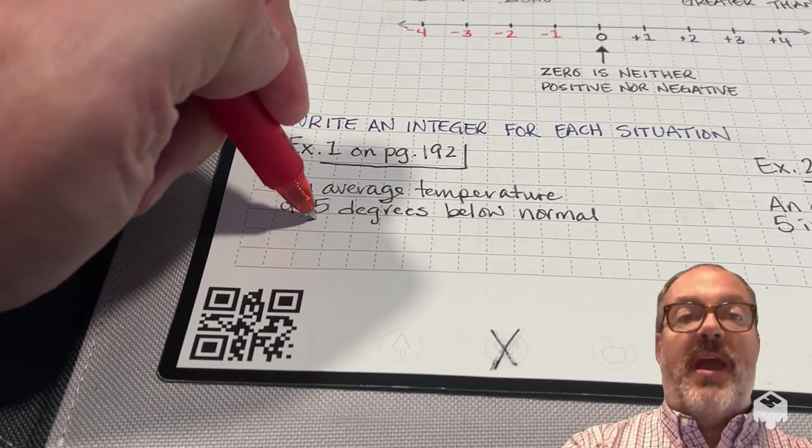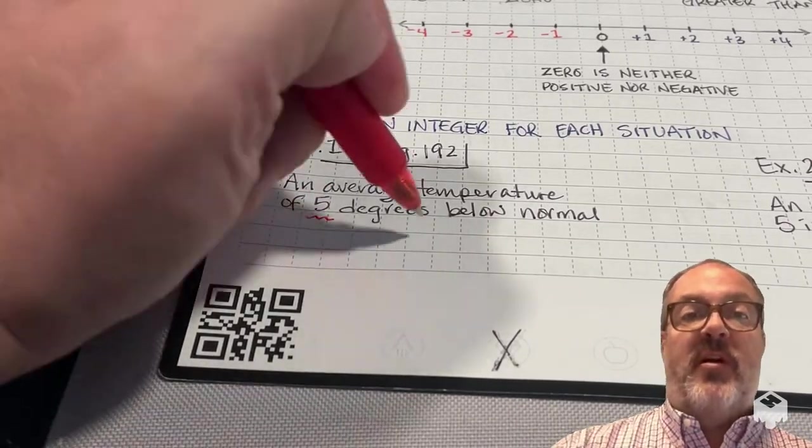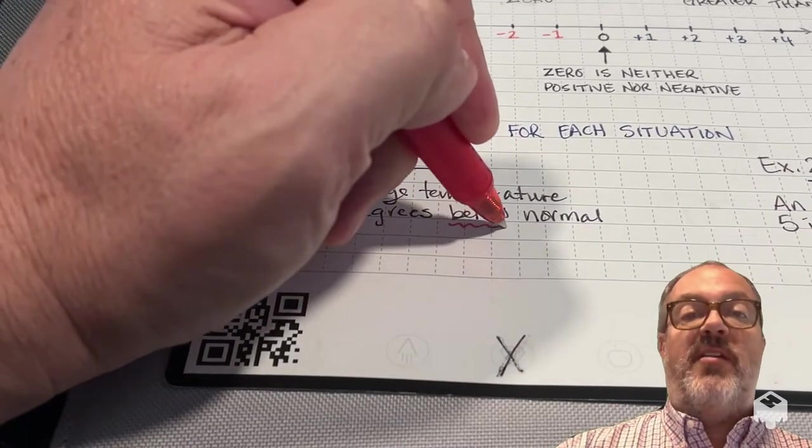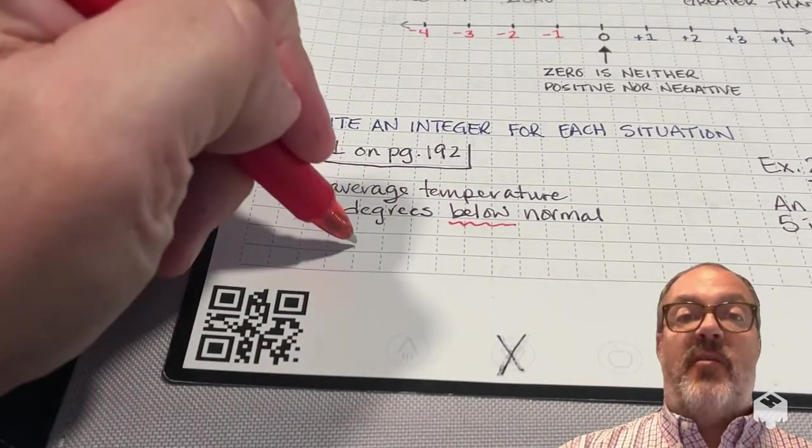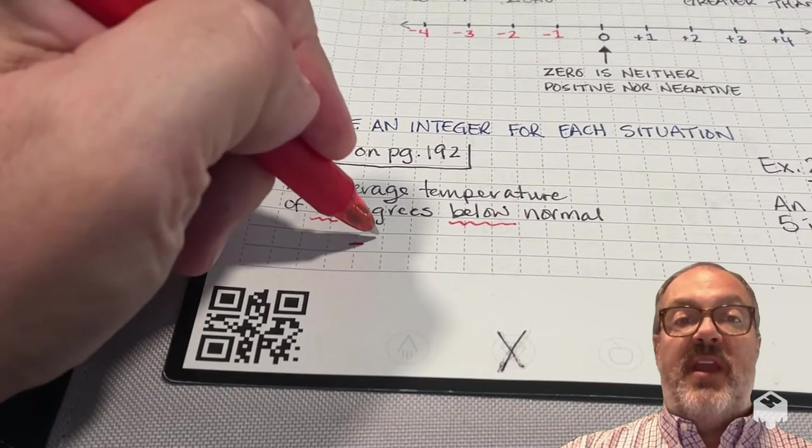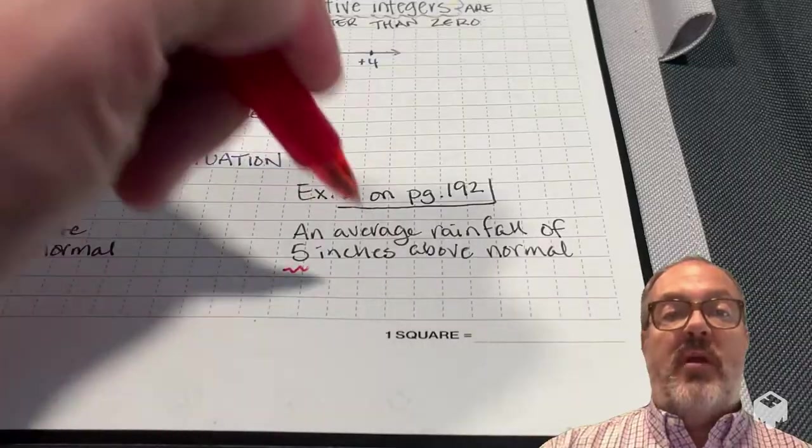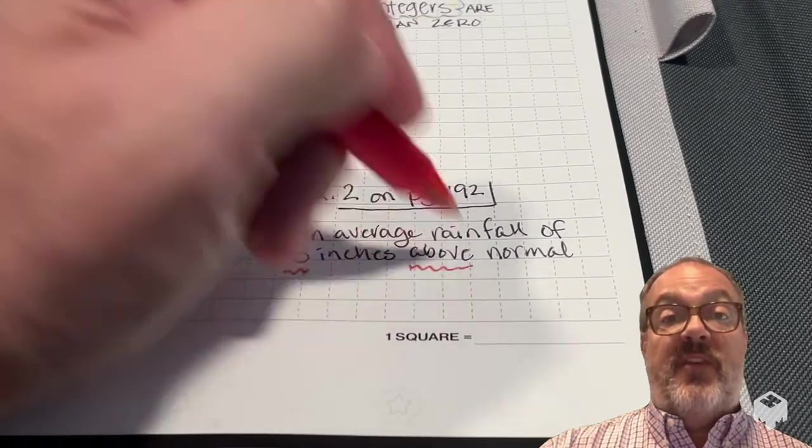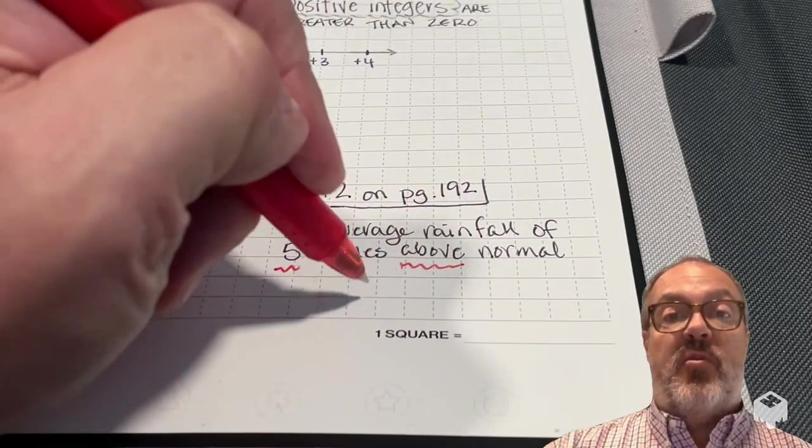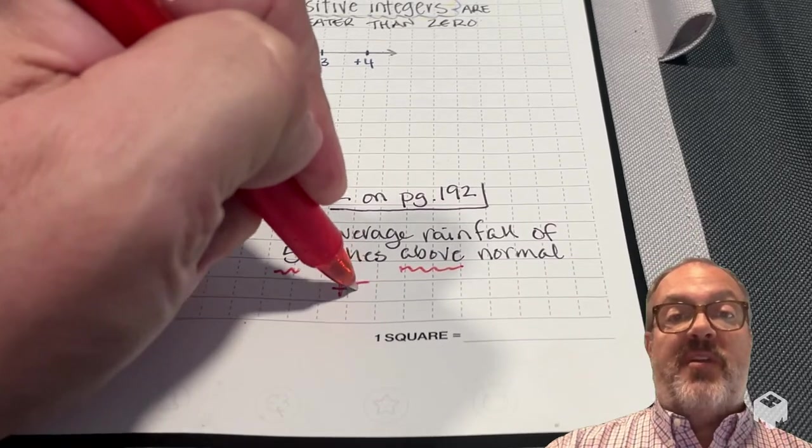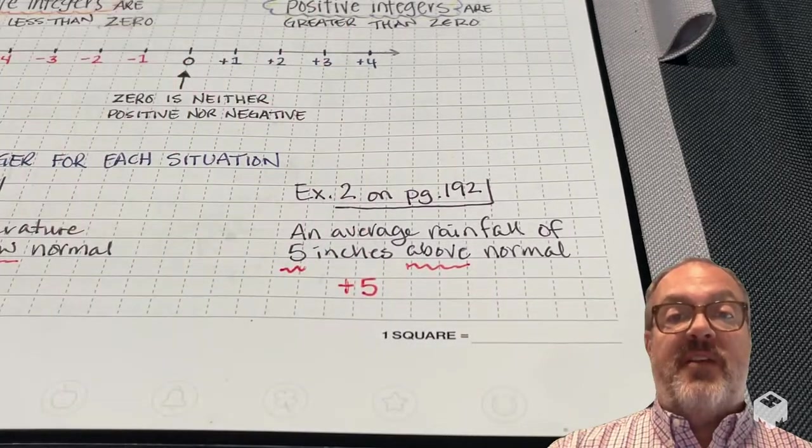We want to look at what number are we talking about. We're talking about 5 degrees below normal, and so I can represent that with the integer negative 5. I want to use the same digit of 5, but this time it's going to be above normal, and so I'm going to represent that with the integer positive 5.